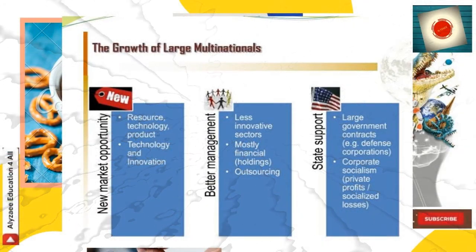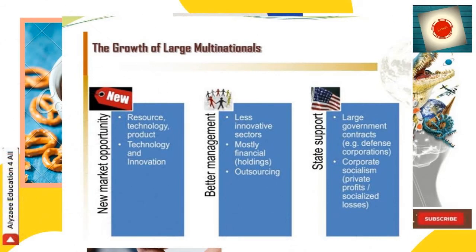In the growth of large multinationals, we look at three areas: new market opportunities, better management, and state support. For market opportunities, one has to look for resource-based technological products, technology, and innovations. In better management, one looks at less innovative sectors, mostly financial holdings and outsourcing. Government support is required for large government contracts like defense operations, private profits, and socialized losses — all backed up by state support.